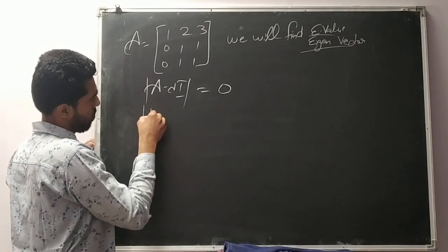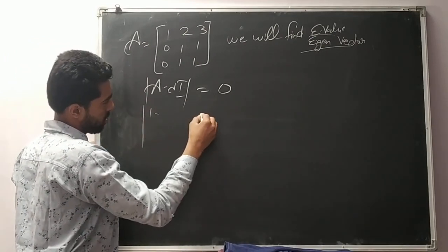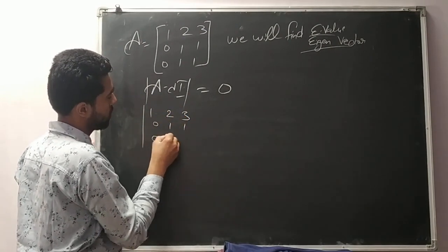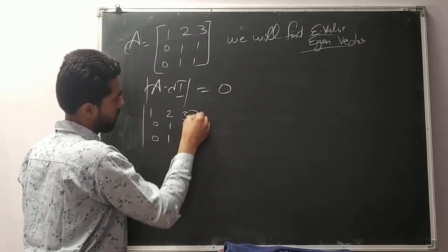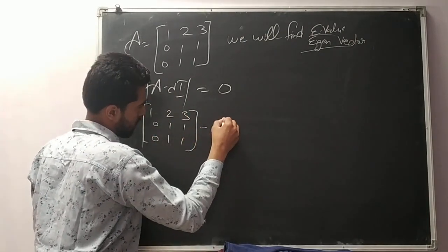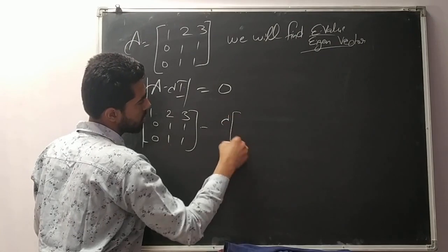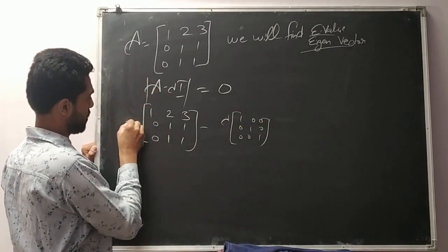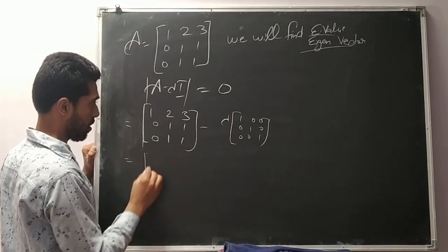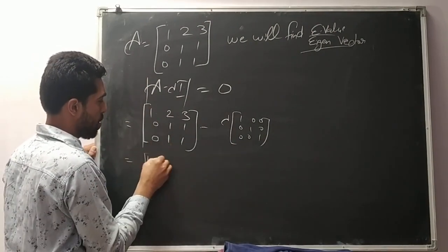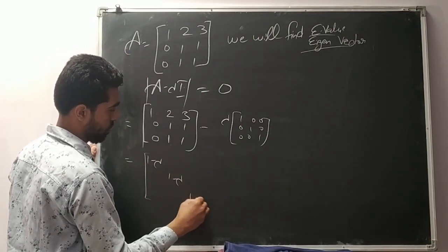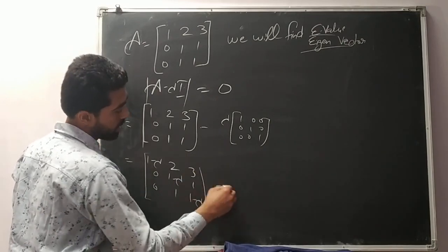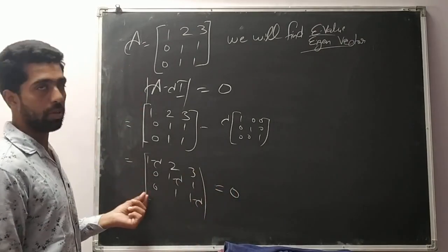It gives me: the matrix is 1, 2, 3 / 0, 1, 1 / 0, 1, 1, minus lambda times I (where I is the identity matrix with 1s on the diagonal). This determinant equal to 0 gives me the eigenvalue.